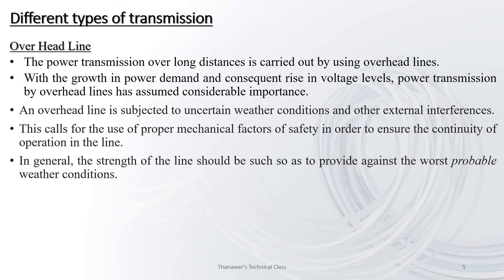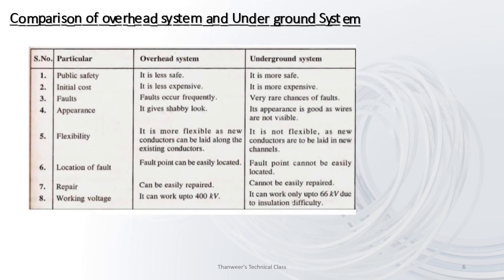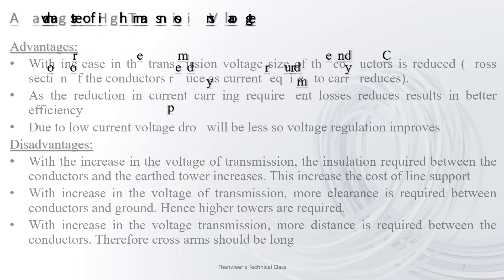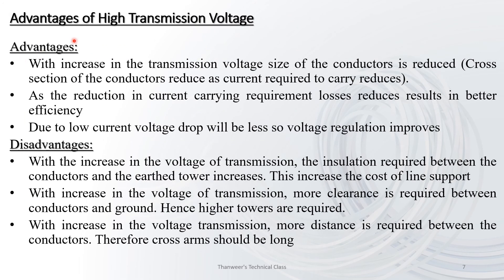This is a comparison of overhead system and underground system. Regarding public safety and initial cost — with the increase in transmission voltage, the size of conductors is reduced. The increase in voltage reduces current-carrying requirements, so losses reduce, resulting in better efficiency. With low current, voltage regulation also improves.